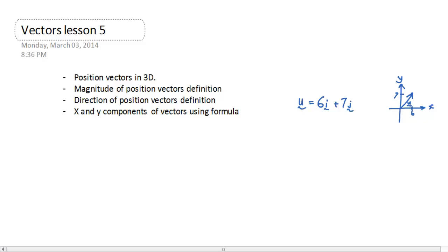So we're going to extend that idea to now have position vectors in 3D. So let's define another vector, let's call it w. And I'm now going to have 6i plus 7j plus 8k.